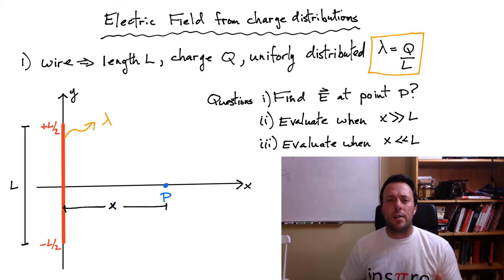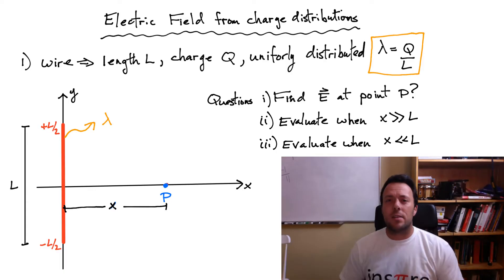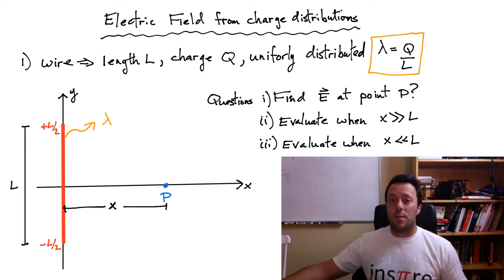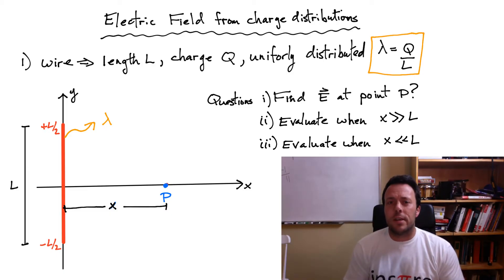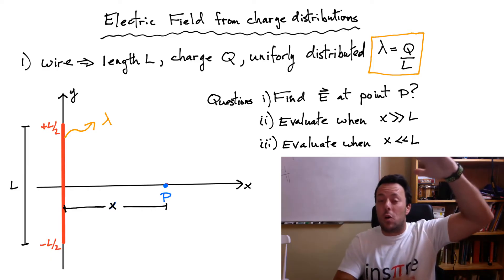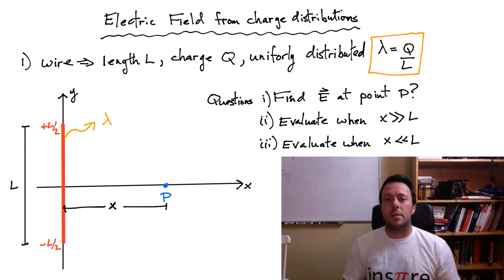Consider the wire I've got here on the whiteboard. I want to look at three specific questions. I want to find the electric field when I'm a distance x away from that wire, placed right at the center of the wire. The second part is I want to take that expression and see what happens when I go really, really far from the wire — what does the electric field look like? And in the third case, I want to see what happens when I put my position right near the wire. When I'm really close to the wire, the wire looks really, really long. So we're going to look at our expression and take the right limits and see what the expression simplifies to.